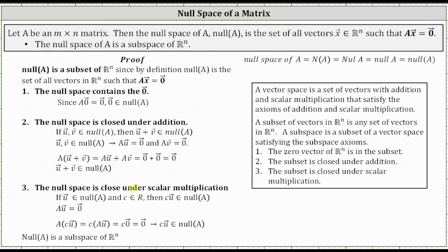Finally, we need to show the null space is closed under scalar multiplication, which means if vector u is in the null space of A and c is any real number, then c times vector u is also in the null space of A. We know A times vector u equals the zero vector. Considering A times the product of c and vector u, we can rewrite this as c times A times vector u. Since A times vector u equals the zero vector, c times the zero vector equals the zero vector. Therefore, c times vector u is in the null space of A, which proves the null space of A is a subspace of R^n.